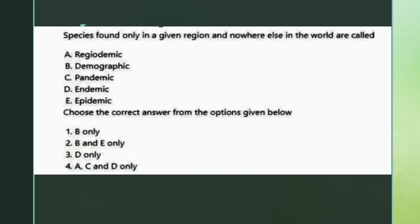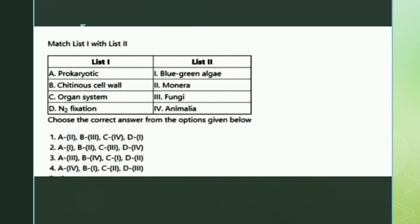The next is a match the following. List one consists of: prokaryotic, cutaneous cell wall, organ system, nitrogen fixation. List two consists of: blue-green algae, Monera, fungus. The right answer is option one: prokaryotic - Monera, cutaneous cell wall - fungus, organ system - Animalia, nitrogen fixation - blue-green algae.